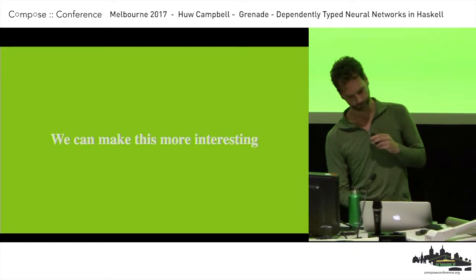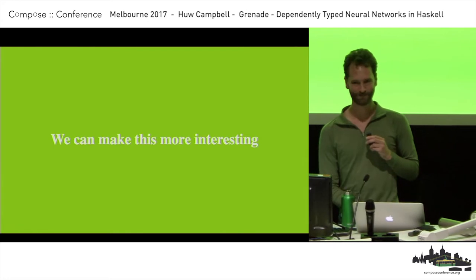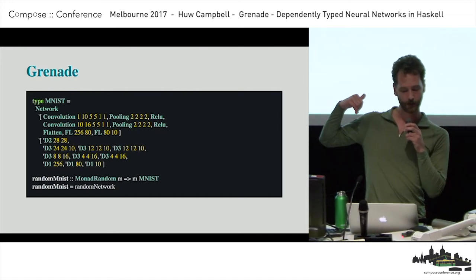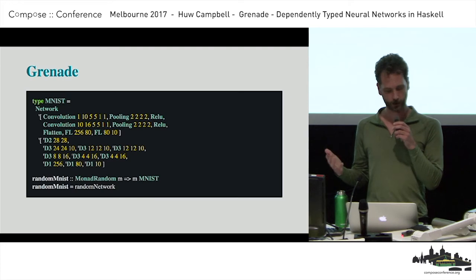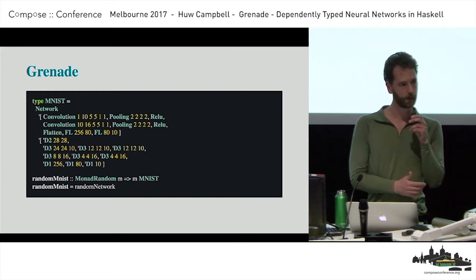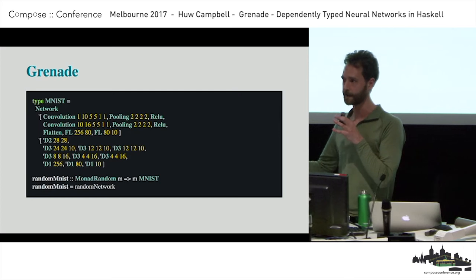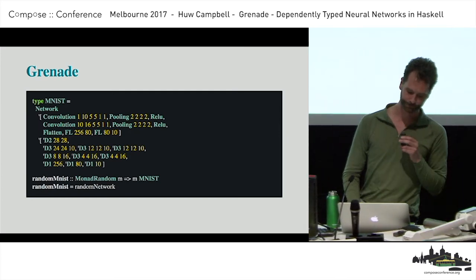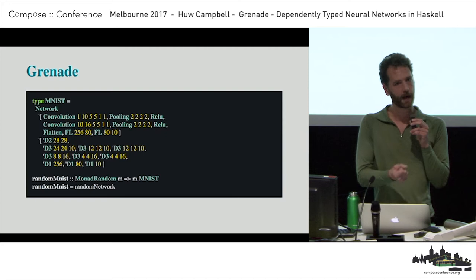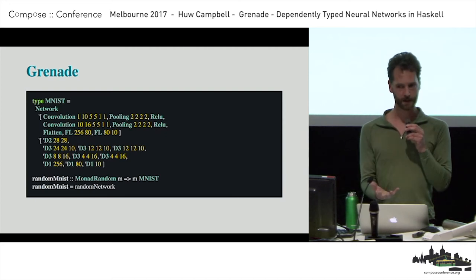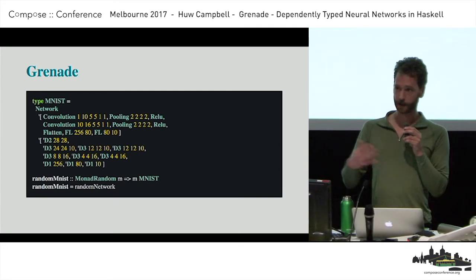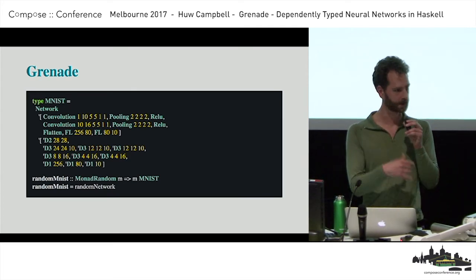But we can make this more interesting, which is what I did. This is a neural network you can write in Grenade. As you can see, it has two type-level lists: the first describes the layers in the network, and the second describes the shapes of data passed between the layers — the data that flows through the neural network. One of the nice things is that this type is really expressive: we don't actually need to write any value-level code to instantiate a random value of this type — we can just call random_network and there's enough information to do it.